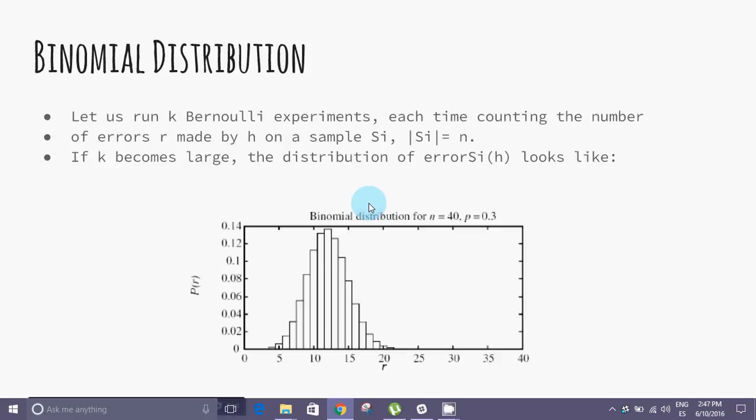As we can see, this is called a binomial distribution. The graph is a good example of a PDF.